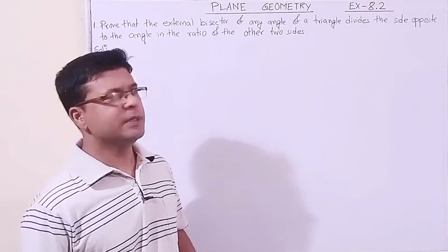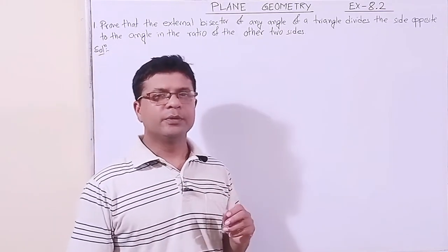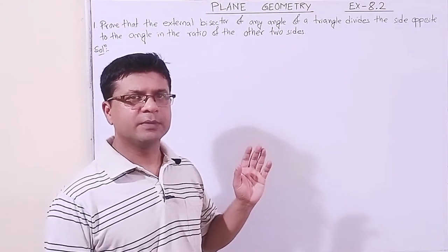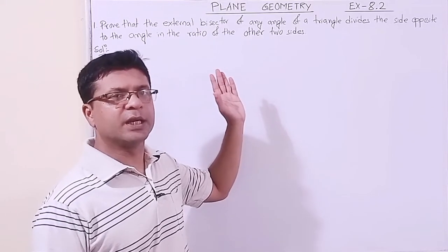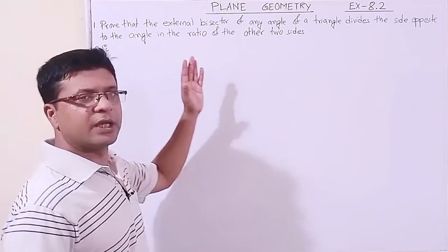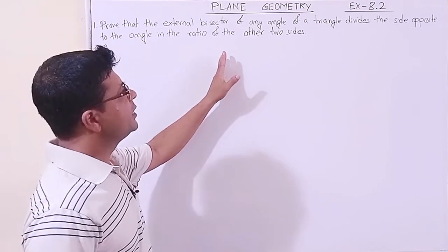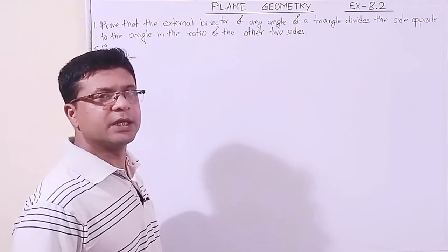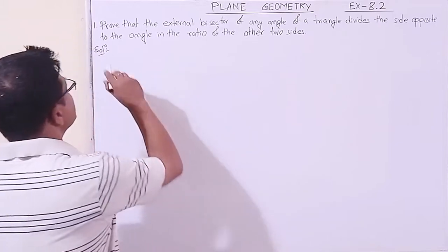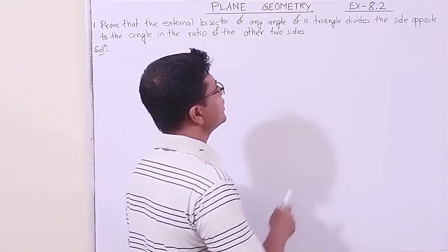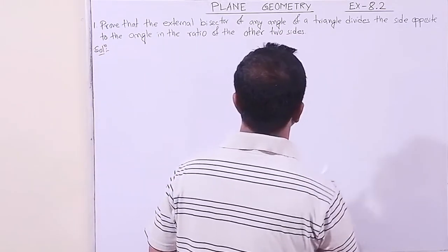After the theorem, let us start exercise 8.2. In the theorem we proved the internal angle bisector theorem. Question 1 involves the external angle bisector, which we also need to learn as a property for many questions in exercise 8.2.